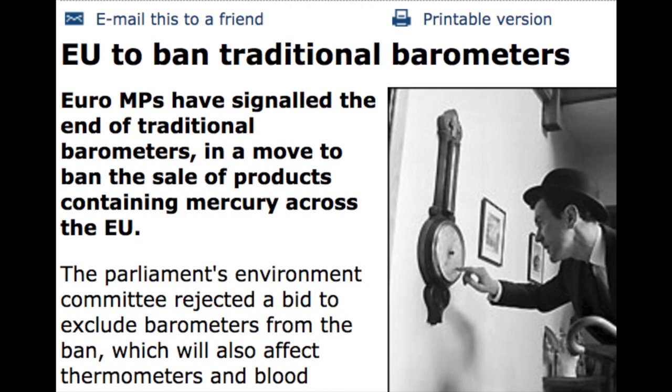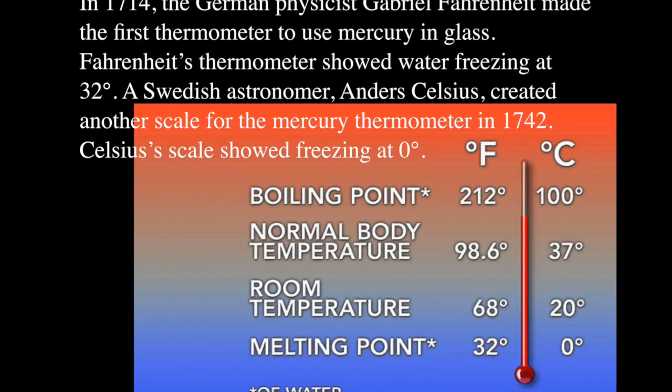Later scientists built upon the barometer. Fahrenheit, in the 1700s, figured out the boiling and melting points of water — setting 32°F as the melting point and 212°F as the boiling point. Later, Swedish astronomer Celsius created another scale — in my opinion far superior and much simpler — where the freezing point is 0°C and the boiling point is 100°C.